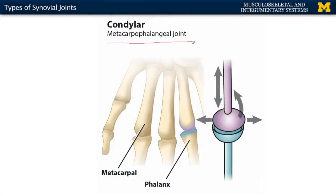Similarly, condylar joints have articulating surfaces shaped slightly differently. Your metacarpophalangeal joints are not going to be as deep in their articulation on the proximal phalanx, and not quite as bulbous as the saddle joints. But they allow the same movements: flexion, extension, abduction, and adduction, which allows for some degree of circumduction.